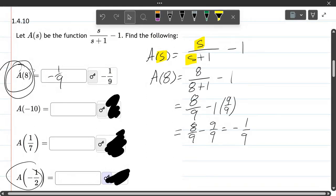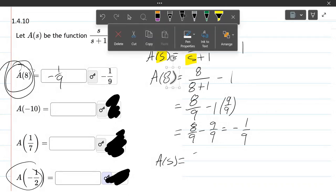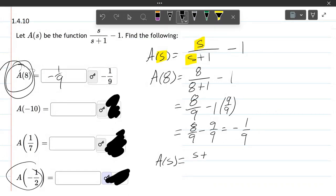So we're going to do the same thing except we're going to plug in negative 1 half. So same first step. Rewrite A of s. It's s over s plus 1 minus 1.